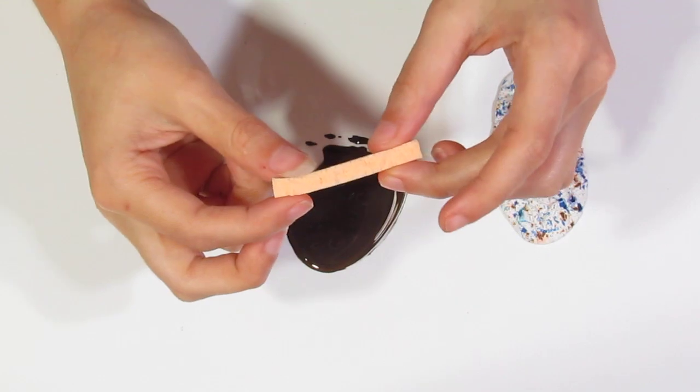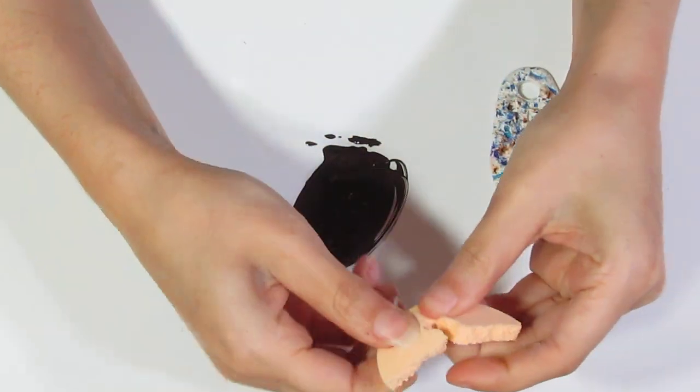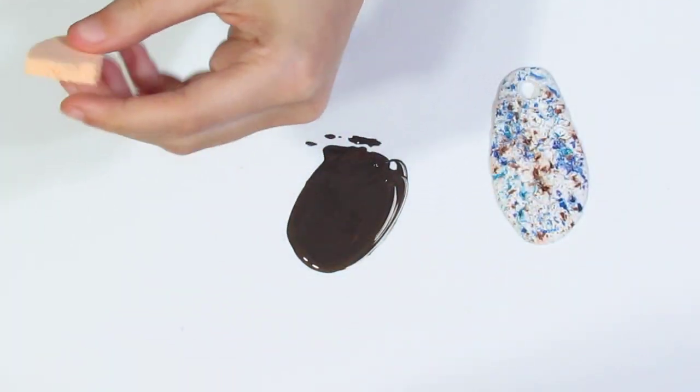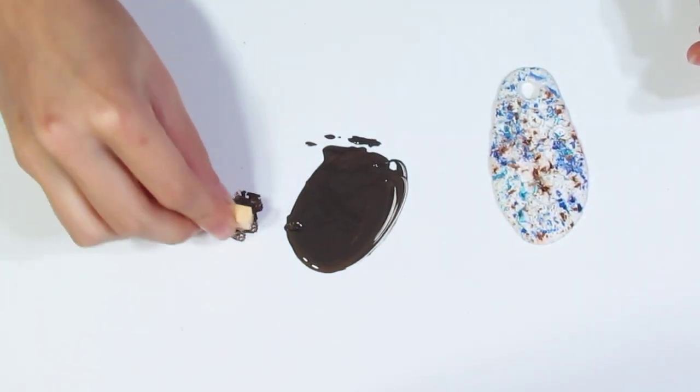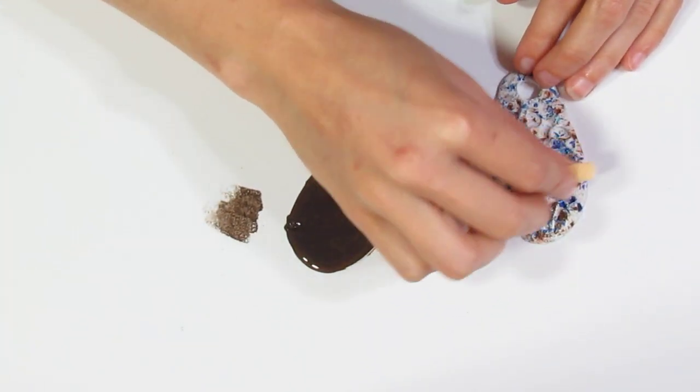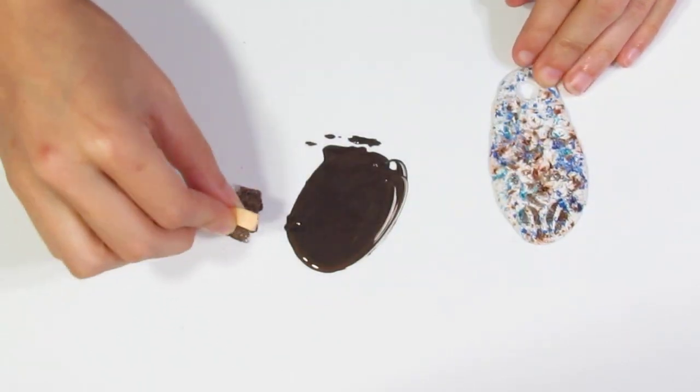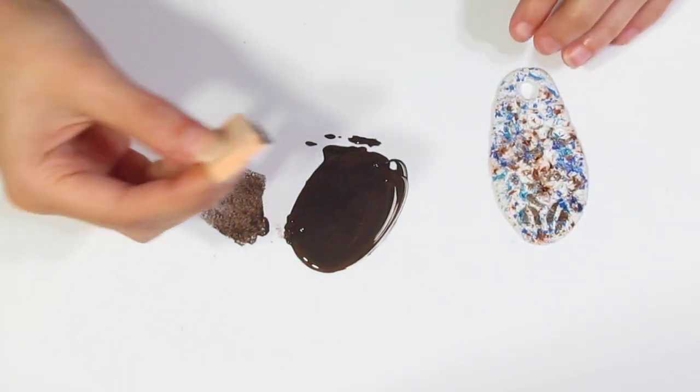I just basically ripped a makeup sponge in half. And I'll basically just take that and I'm going to dab it down so that I have very little paint on there. And then I'm just going to go over the surface. Like so.